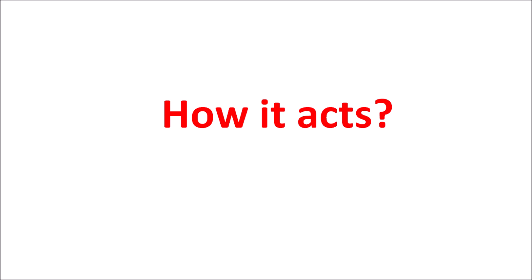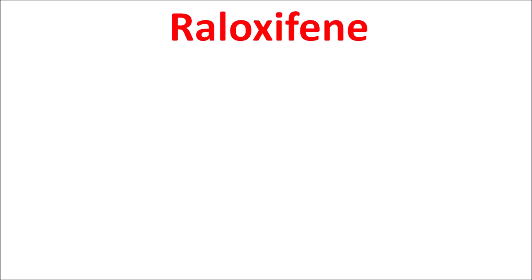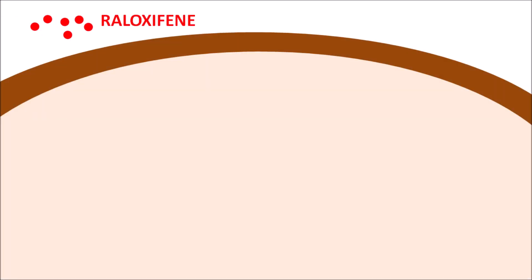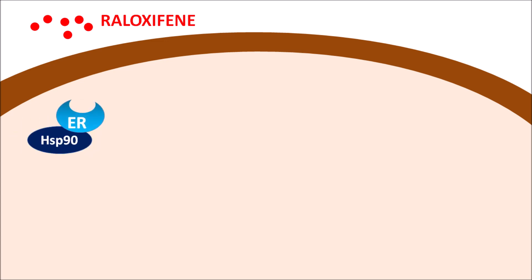Now let us see how this drug acts. Raloxifene can act as both agonist and antagonist. It acts as an agonist on bones, so it can reduce osteoporosis by increasing estrogenic activity. It also acts as an antagonist on the breast tissue. Estrogen receptors are present within the cytoplasm, attached with one of the proteins, HSP-90 — heat shock protein-90.